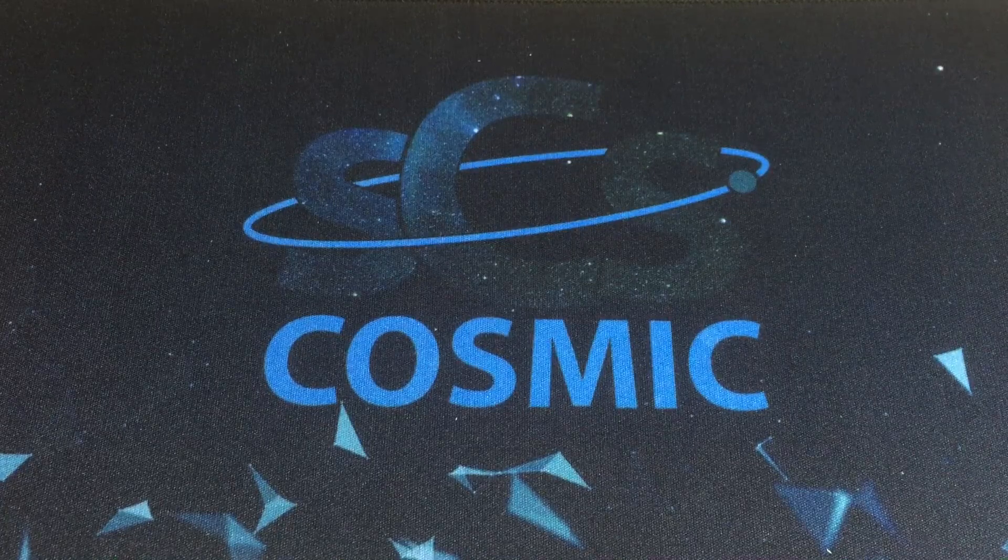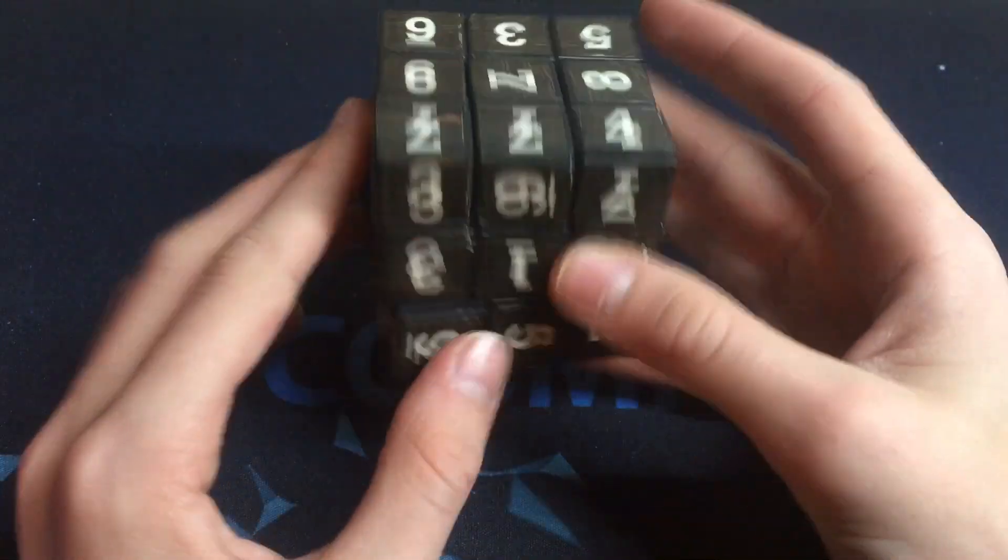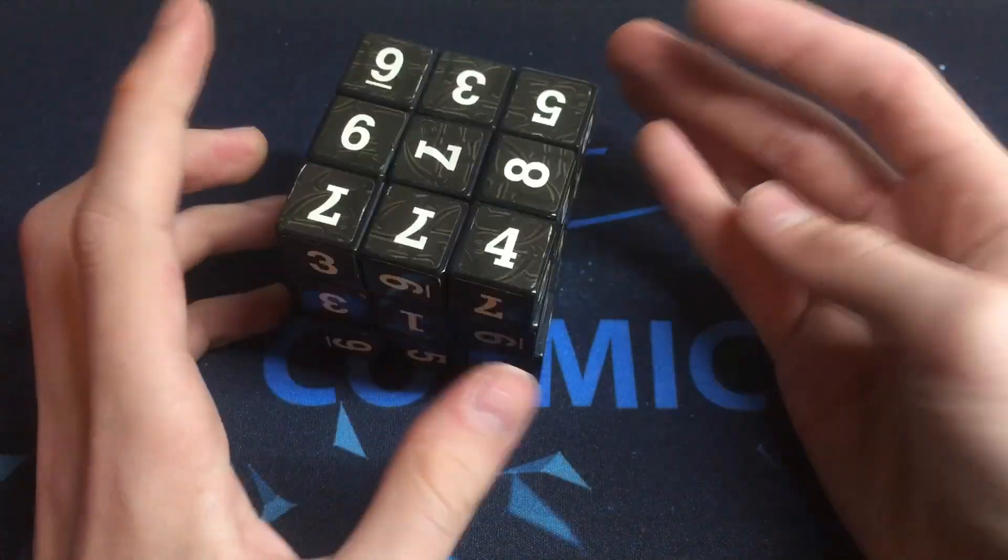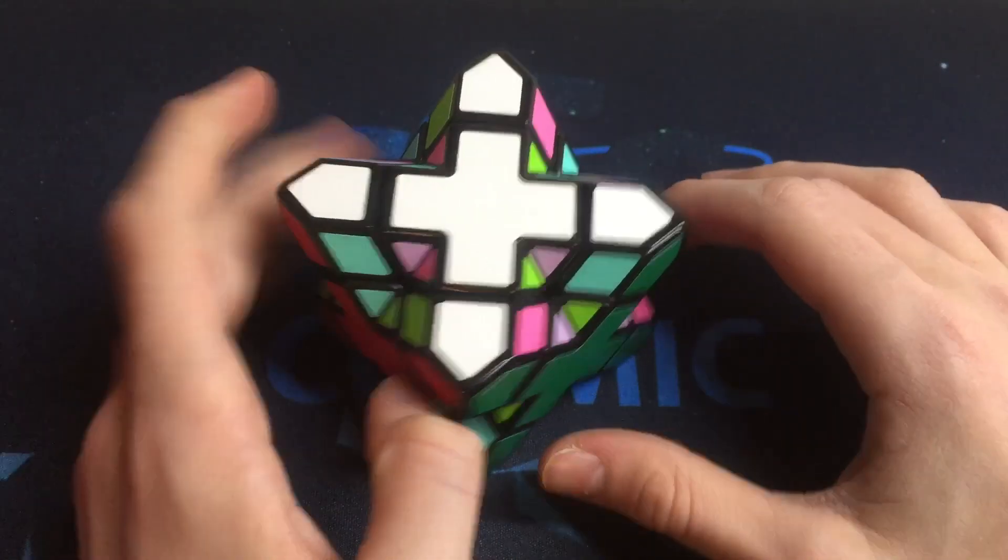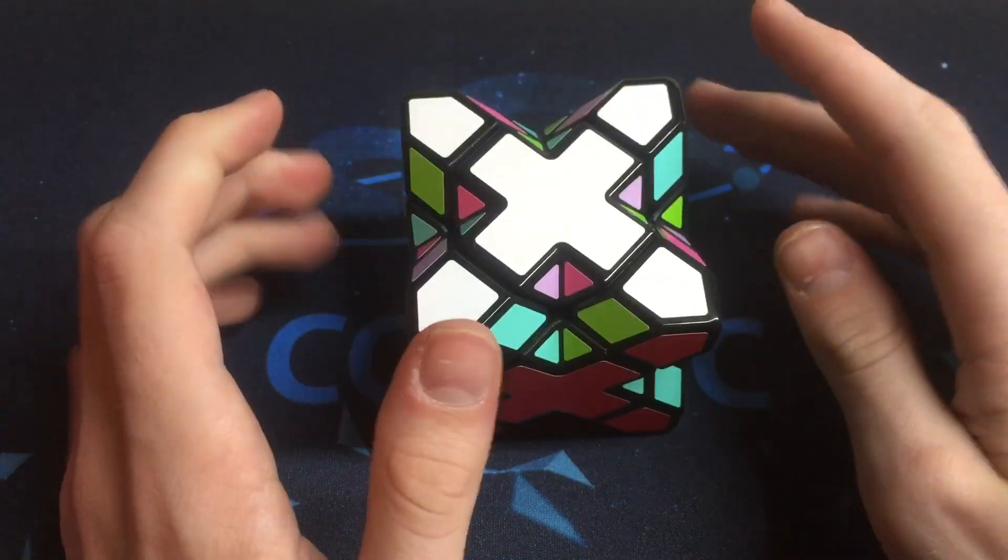Okay, so now I move on to the non-WCA puzzles and the puzzles that are broken. This is a Skewby Cube. I've never solved it and I don't think I will ever solve it. This is the MF8 Crazy 3x3. I don't know how to go about solving it and I don't think I will ever solve it. It's just like the last puzzle.